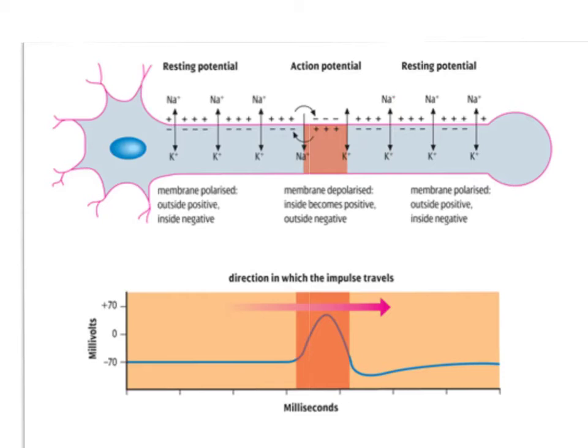And it travels continually down the membrane. Now, after it's been stimulated and been depolarized to create that difference in potential, it's gradually repolarized — or it's quickly repolarized — by the potassium moving back outside of the cell.